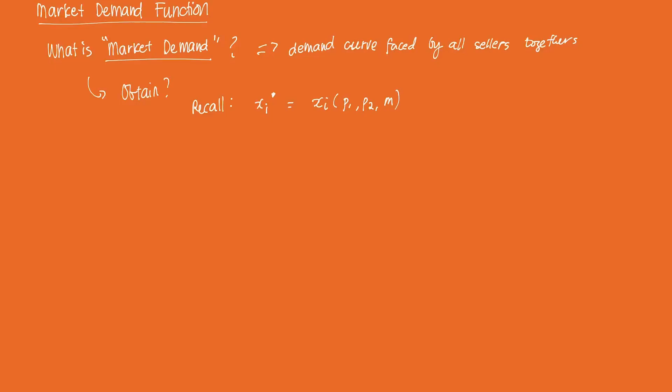Now, how do we calculate the market demand? Well, essentially, we're just going to sum up all of the Marshallian demand functions of every single consumer in a given market.